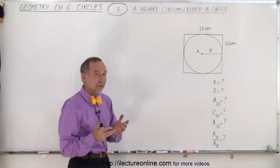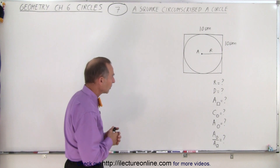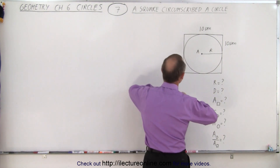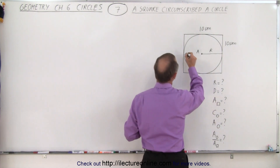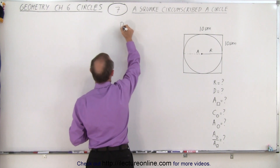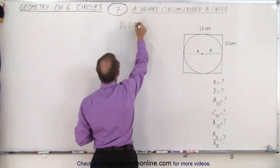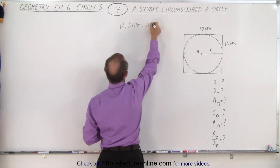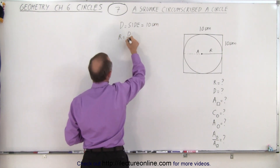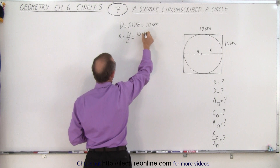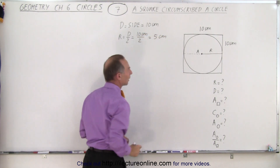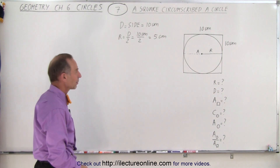We're given that the side of the square is equal to 10 centimeters. That means that the diameter of this circle will also be equal to 10 centimeters. So right away we can say the diameter is equal to the side of the square, which is 10 centimeters. And since the radius is equal to half the diameter, that would be 10 centimeters divided by 2, or 5 centimeters. So right away we're able to find the radius and the diameter of the circle.